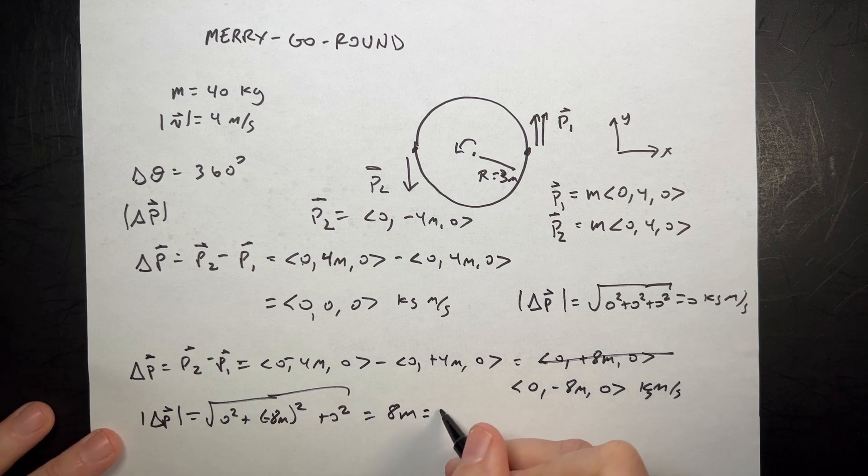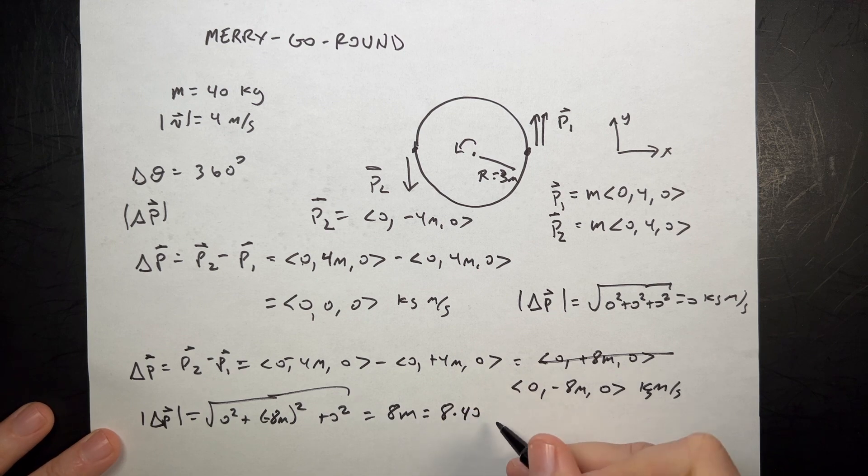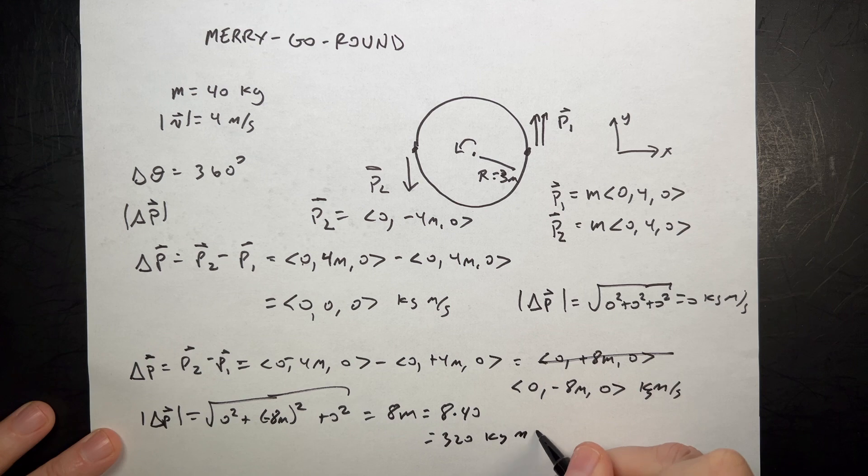And then put in the number, so 8 times the mass of 40. So that's 320 kilograms meters per second. And that's the change in momentum in that case. The end.